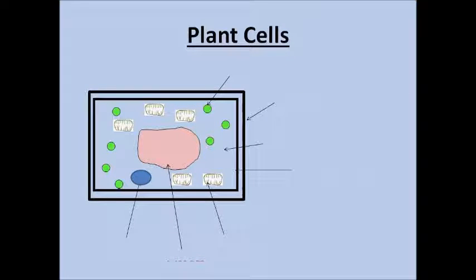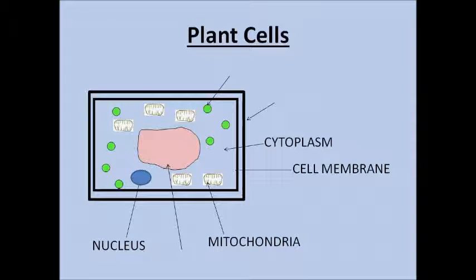Plant cells contain all the same structures found in the animal cells such as the cell membrane, the cytoplasm, the mitochondria and the nucleus, but they contain other structures too.